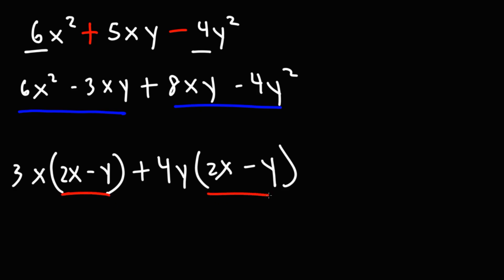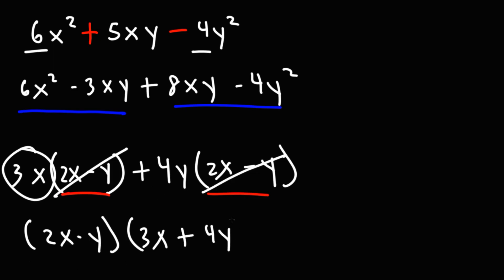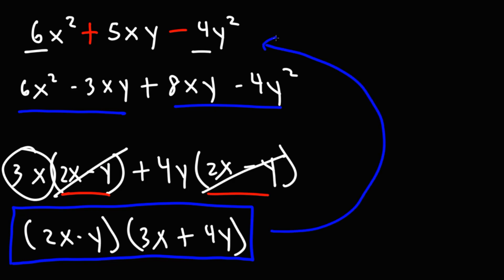Notice we have a common factor of (2x − y), which is a good sign. Factoring out (2x − y) from the first term leaves 3x, and from the second term leaves plus 4y. So the answer is (2x − y)(3x + 4y). You can FOIL it to confirm it gives back the original problem.